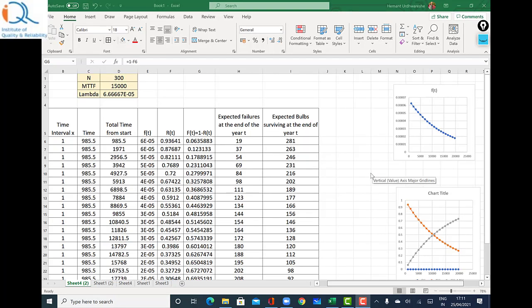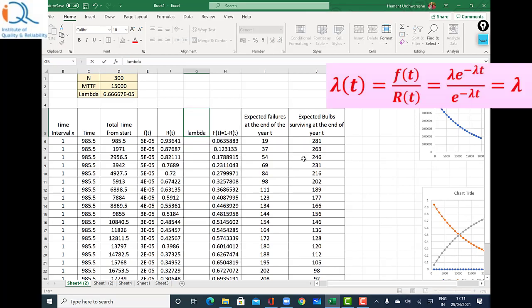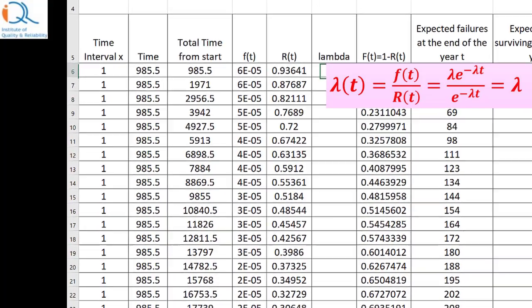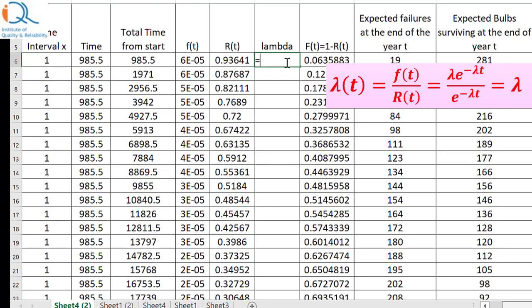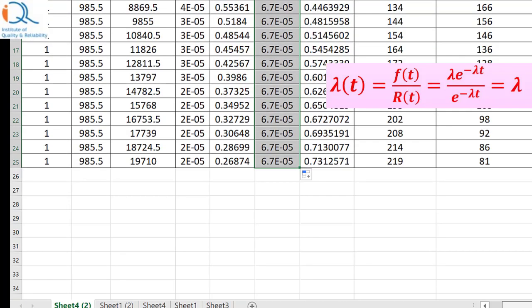Let us also plot the hazard function now. The hazard function I will add a column. And I will just call it lambda t. Just lambda. The hazard function equals f of t upon r of t. So f of t divided by r of t. Now let us see whether we get a constant hazard function.